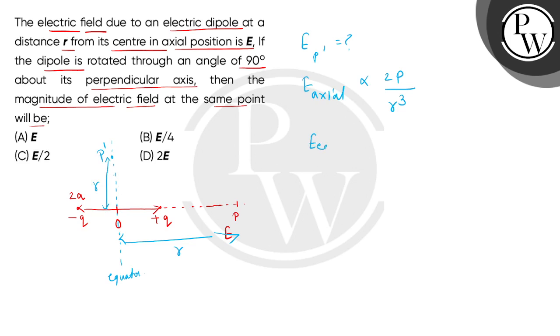Now, we have to find E equator. As we know, E equator is directly proportional to P divided by r cubed. So, if we divide equation number 1 by equation number 2, we have E at point P dash, where P dash is an equatorial point.